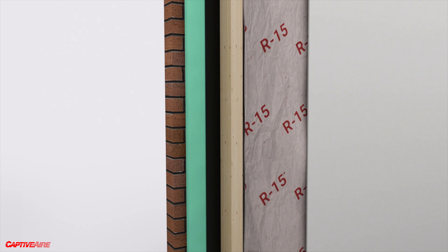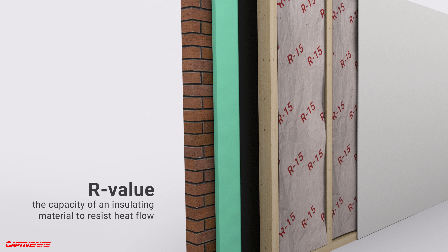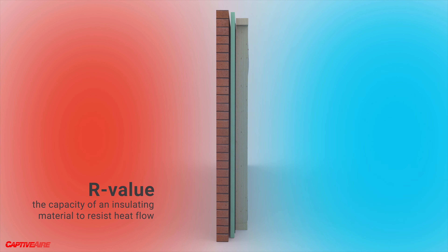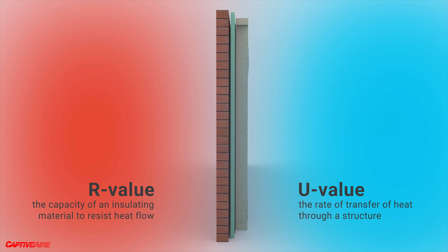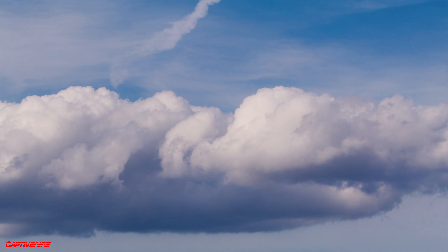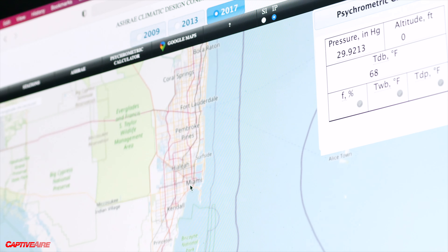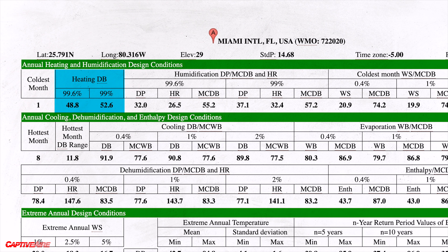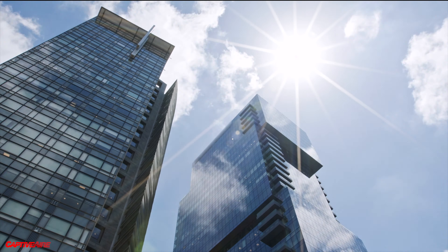Everyone is familiar with the term R-value, or resistance value — essentially, given a certain temperature on one side of that wall and another temperature on the other side, how well does that wall insulate and how fast does heat transfer from one side to the other? Outside air and weather conditions are also a variable. ASHRAE documents different weather stations throughout the country so you can pull up any particular job site, find the nearest weather station, and see what the hottest day, coldest day, and most humid day of the year are to use as design conditions.